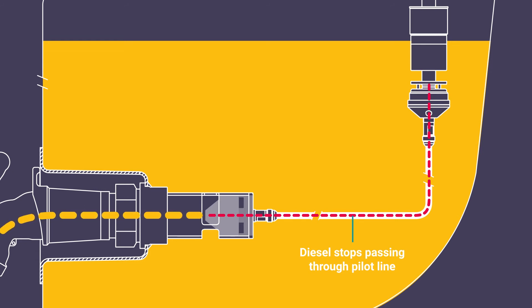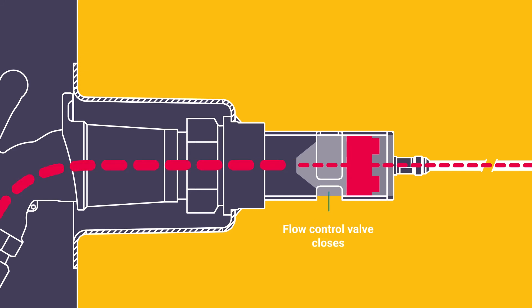As soon as diesel stops moving through the pilot line, the flow control valve is triggered to close.